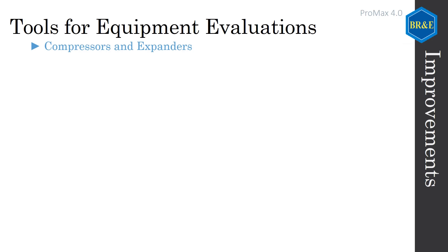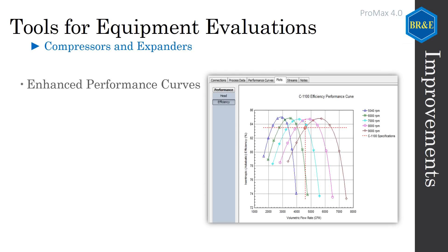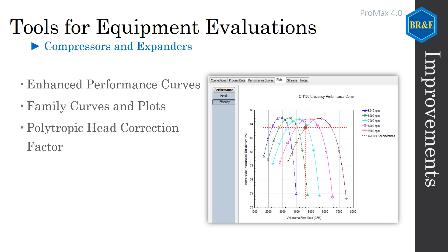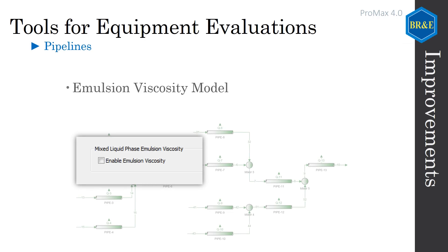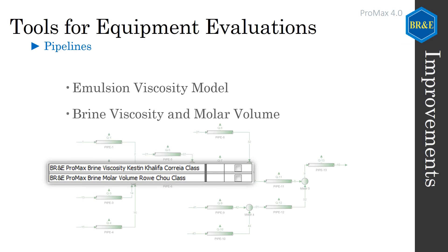We have enhanced our compressor and expander performance curves, including the ability to plot a family of curves with the operating condition noted on the plot. Polytropic turbines can now utilize the polytropic head correction factor for even greater accuracy and predictions on these devices. We've added the ability to model the mixed liquid phase with an emulsion viscosity model, opening the door for quicker pipeline analyses for emulsion-based systems. If you're modeling a pipeline with a brine solution, we've also added new brine viscosity and brine molar volume models for great results in these pipelines.